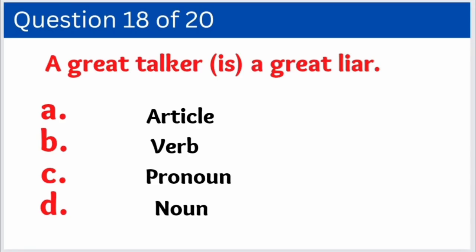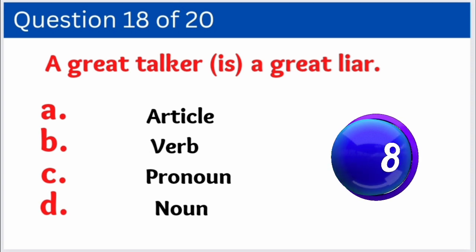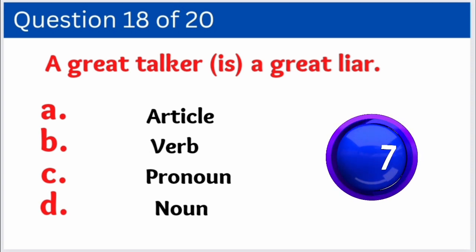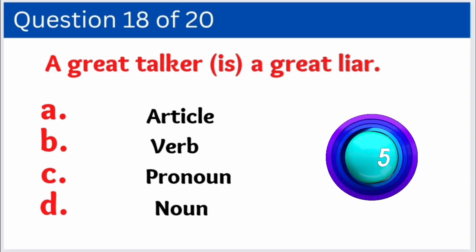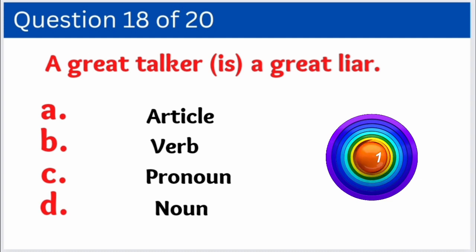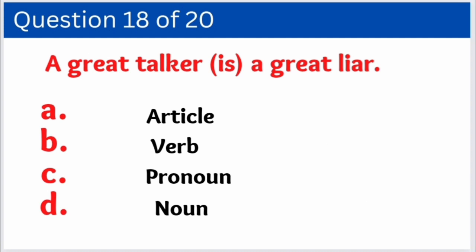Question number eighteen: 'A great talker is a great liar.' Here we have to identify how 'is' is used as which part of speech. Options are: A. Article, B. Verb, C. Pronoun, D. Noun. And the right answer is option B — Verb. 'Is' is used here as a verb.